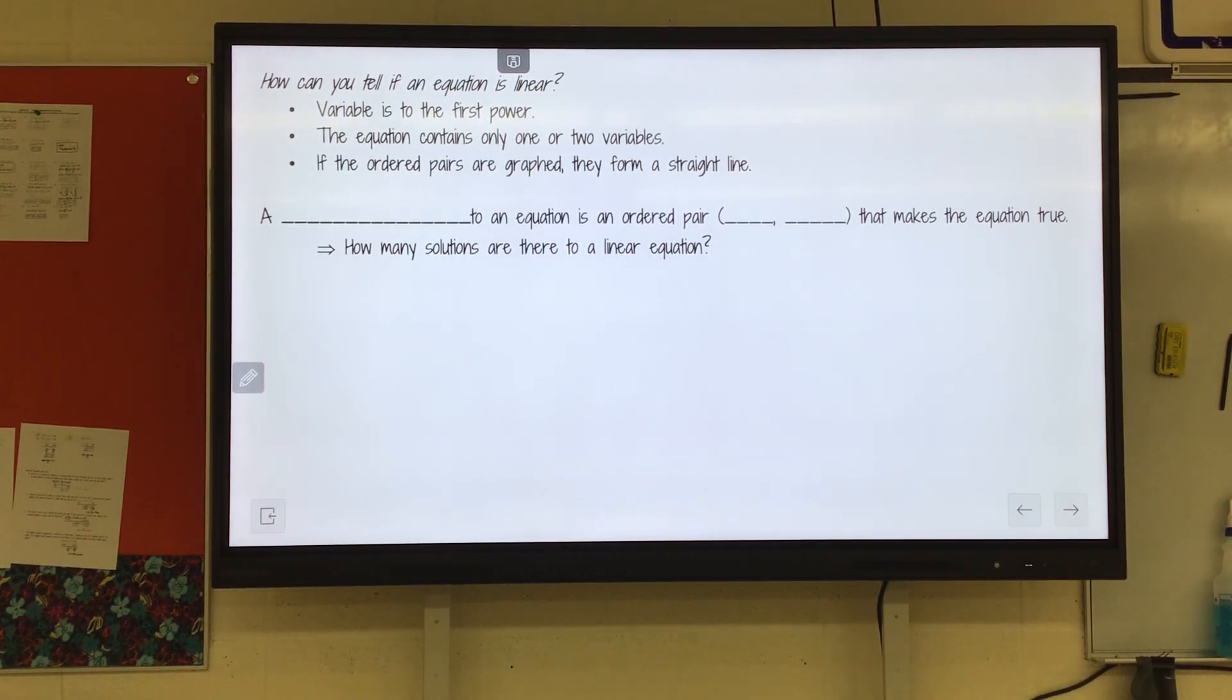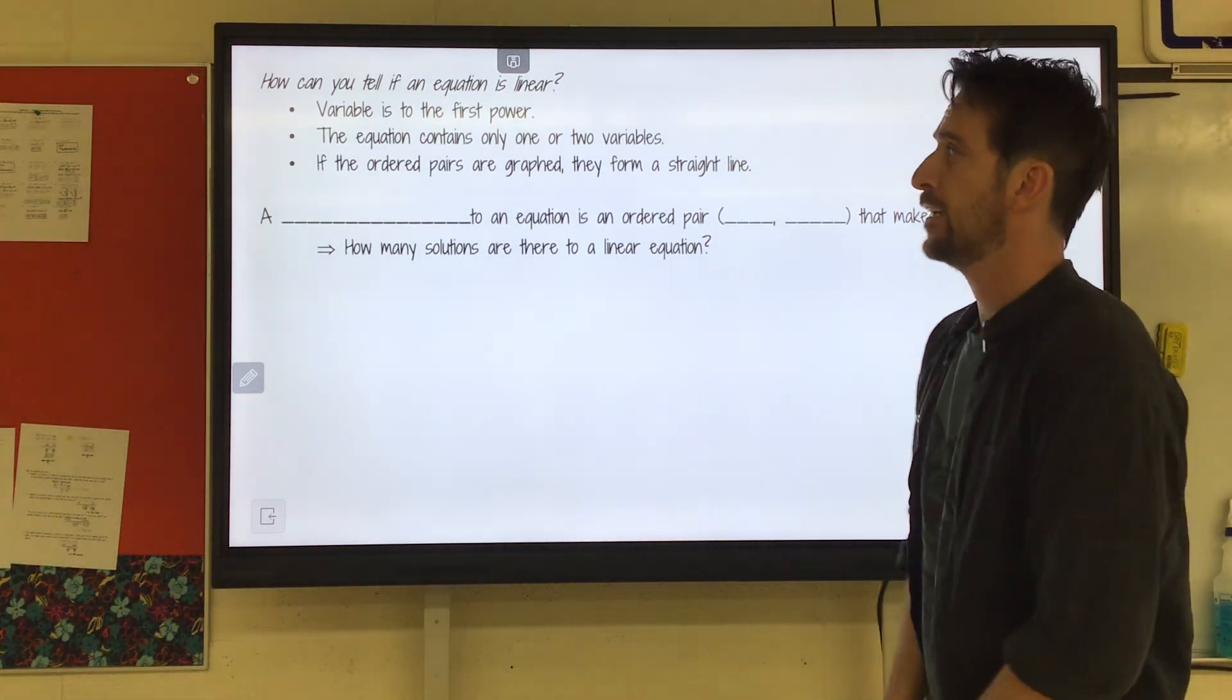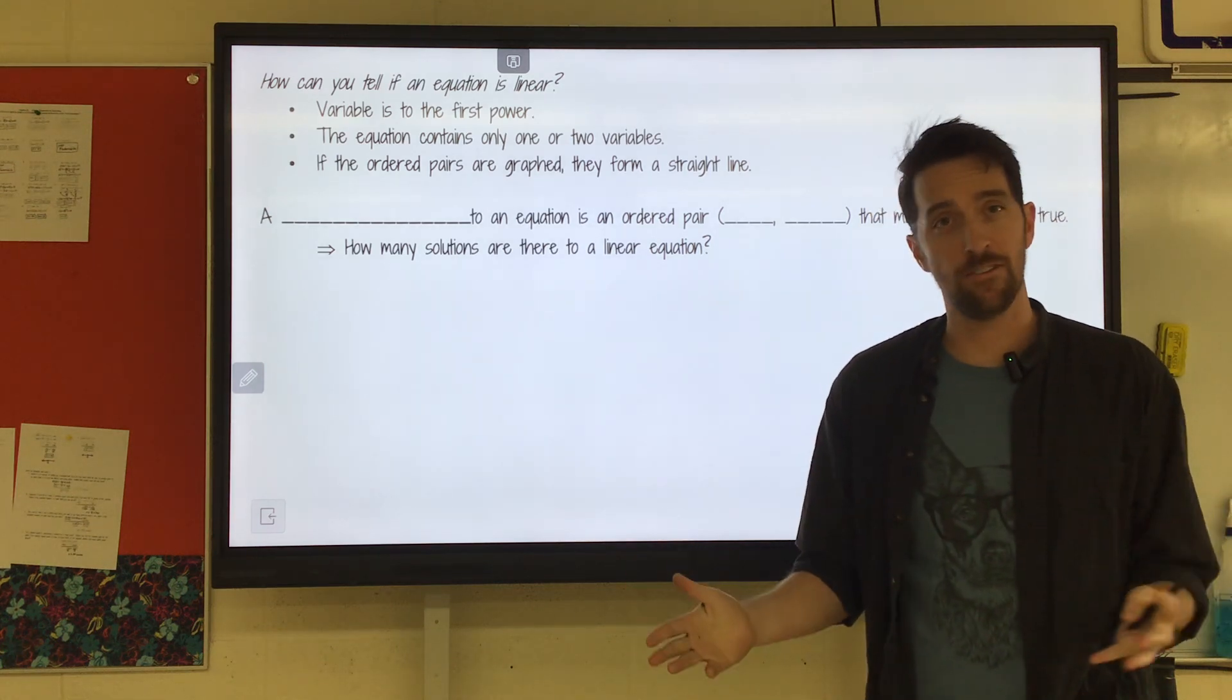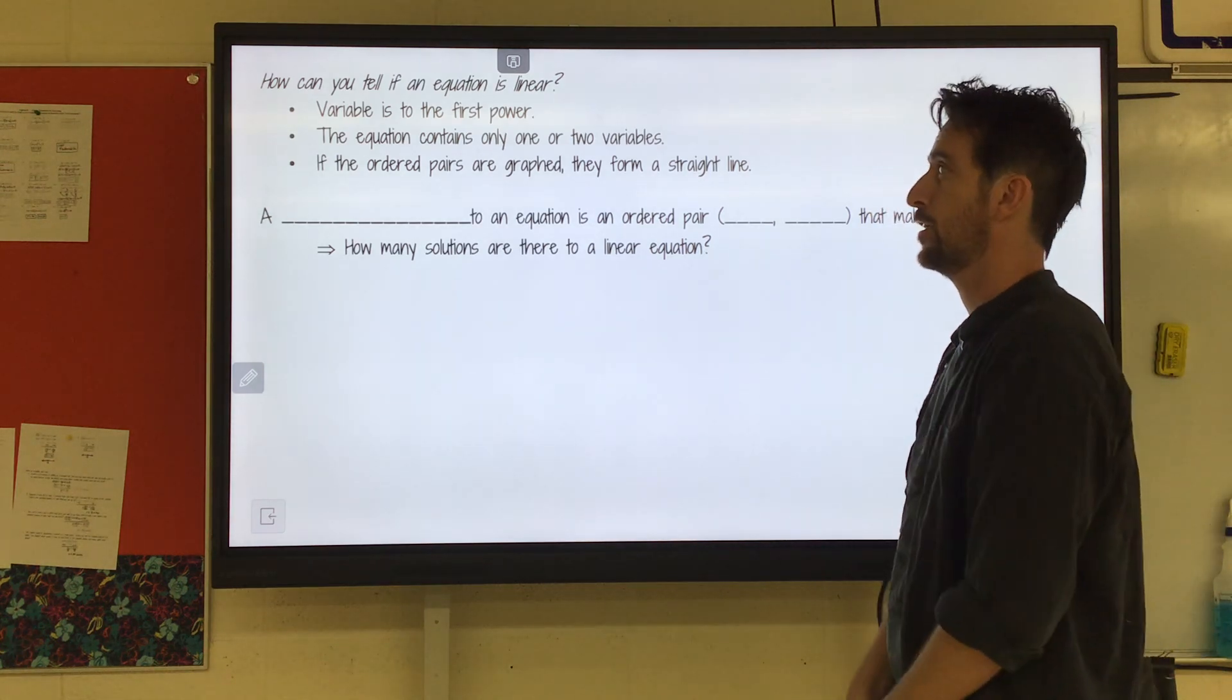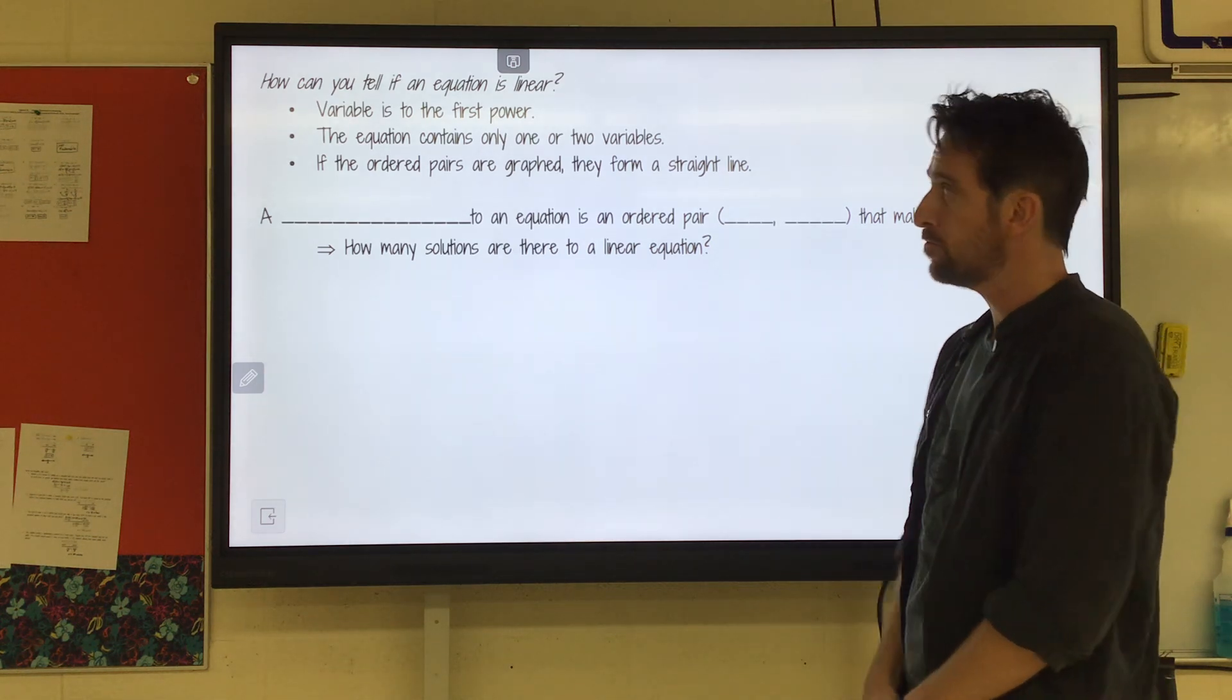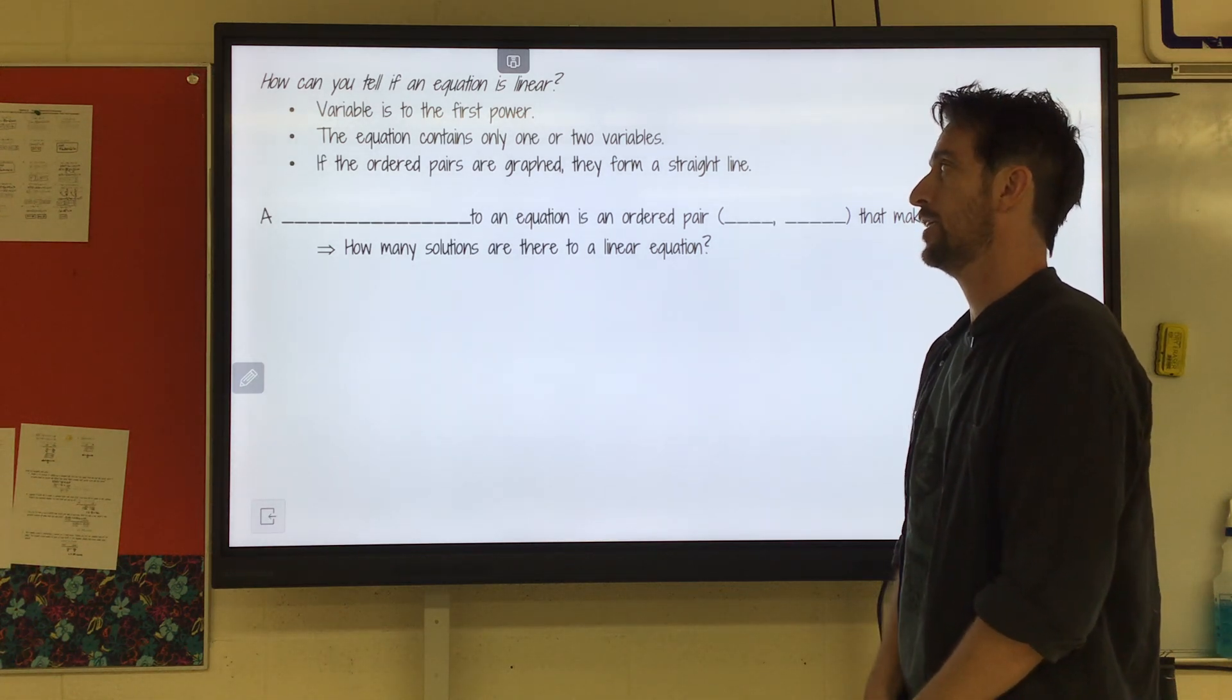We're going to graph some linear functions today using the table method. It's very exciting. How can you tell if an equation is linear? Well, it's going to be x to the first power. That's the big clue. The equation contains only one or two variables, and if the ordered pairs are graphed, they form a straight line.